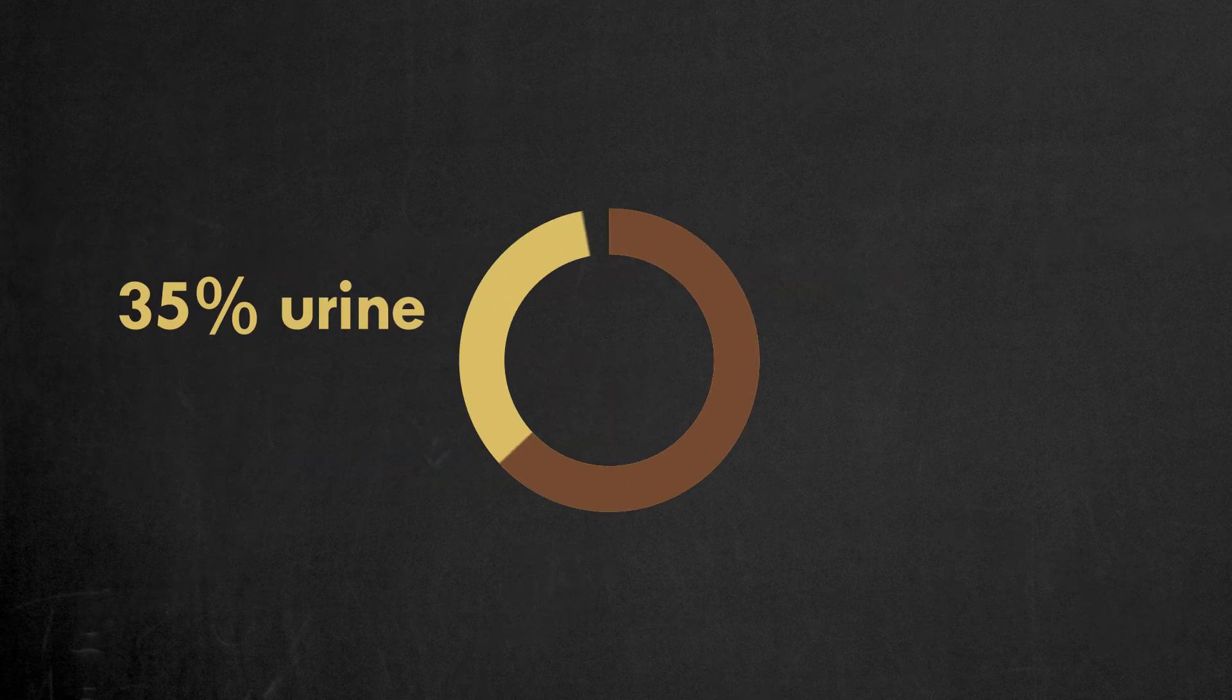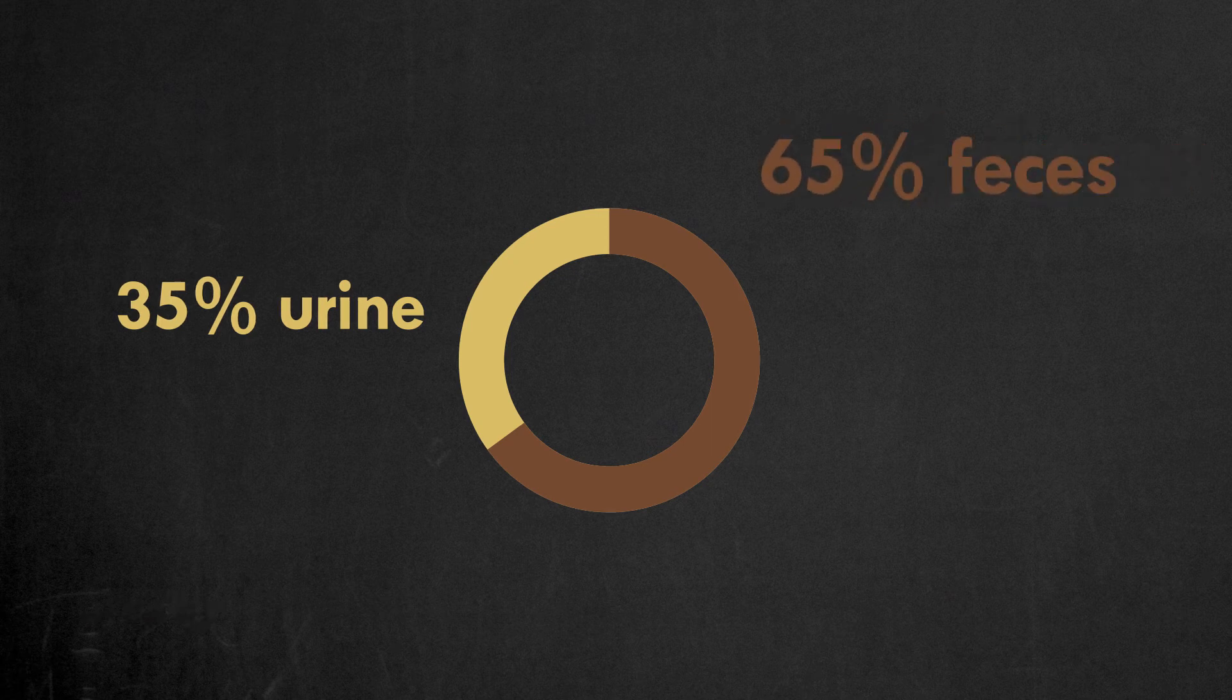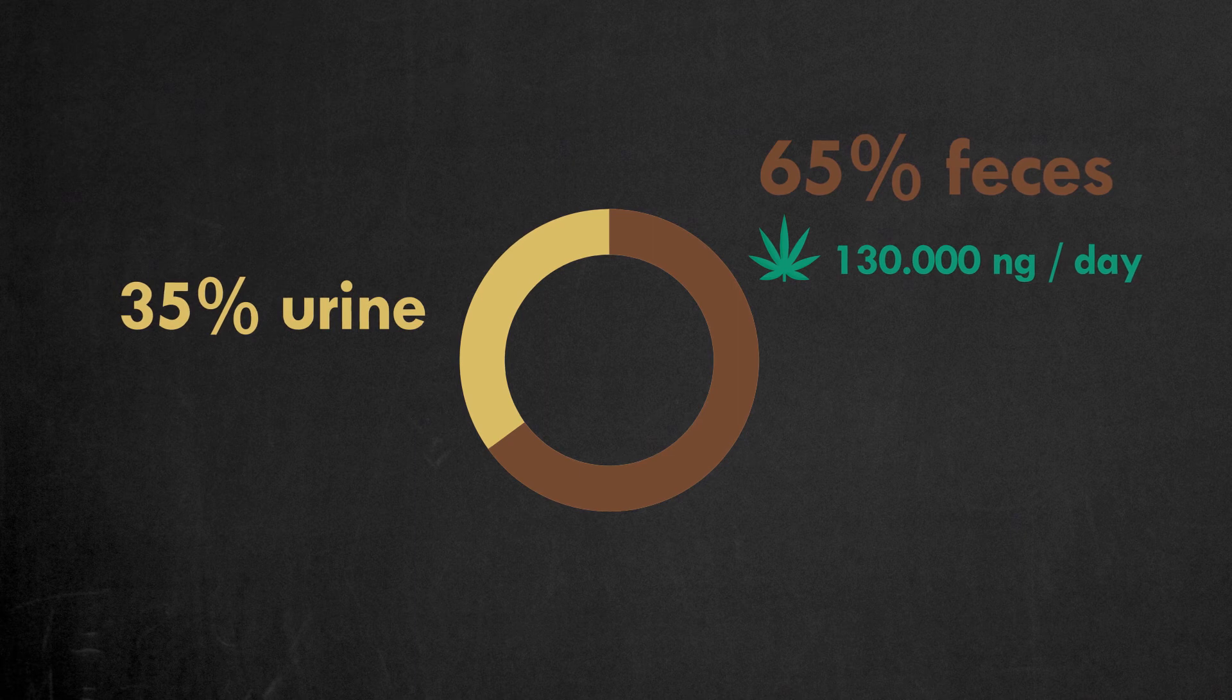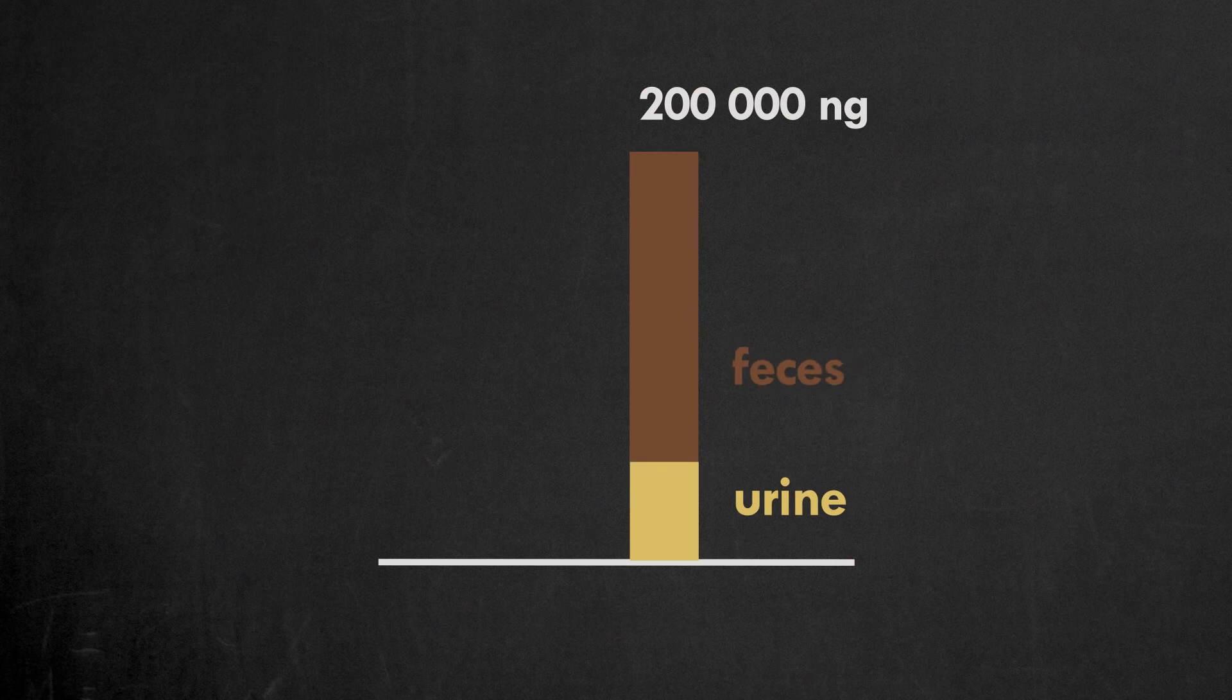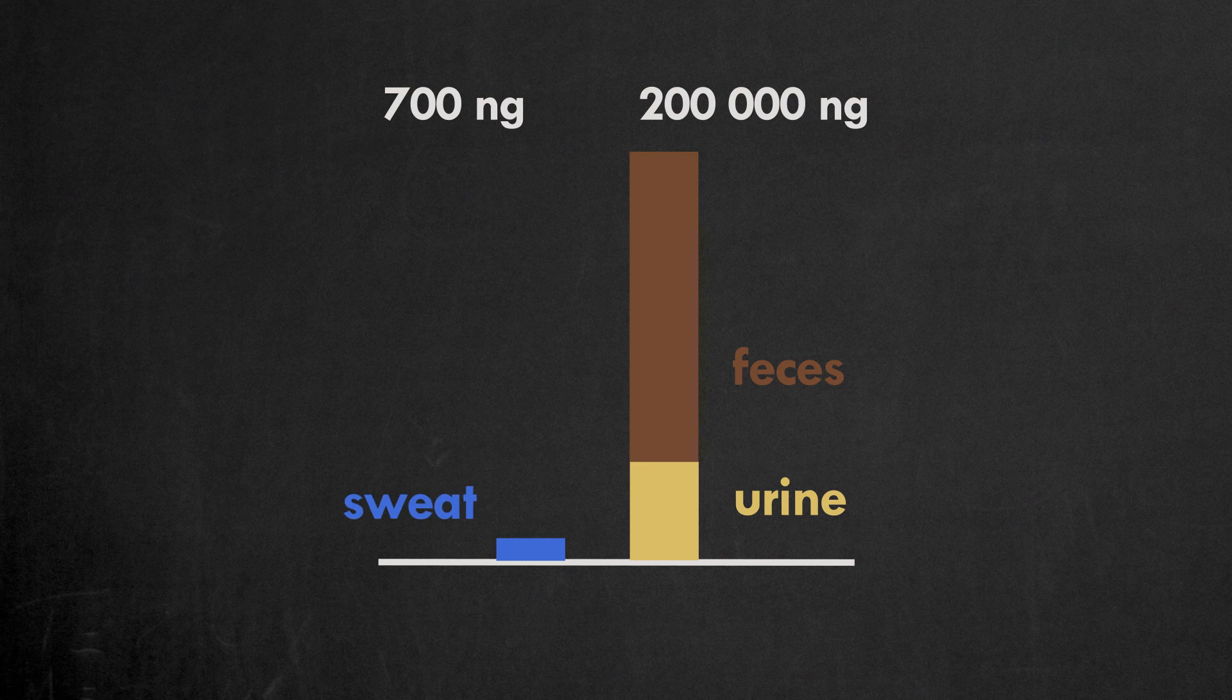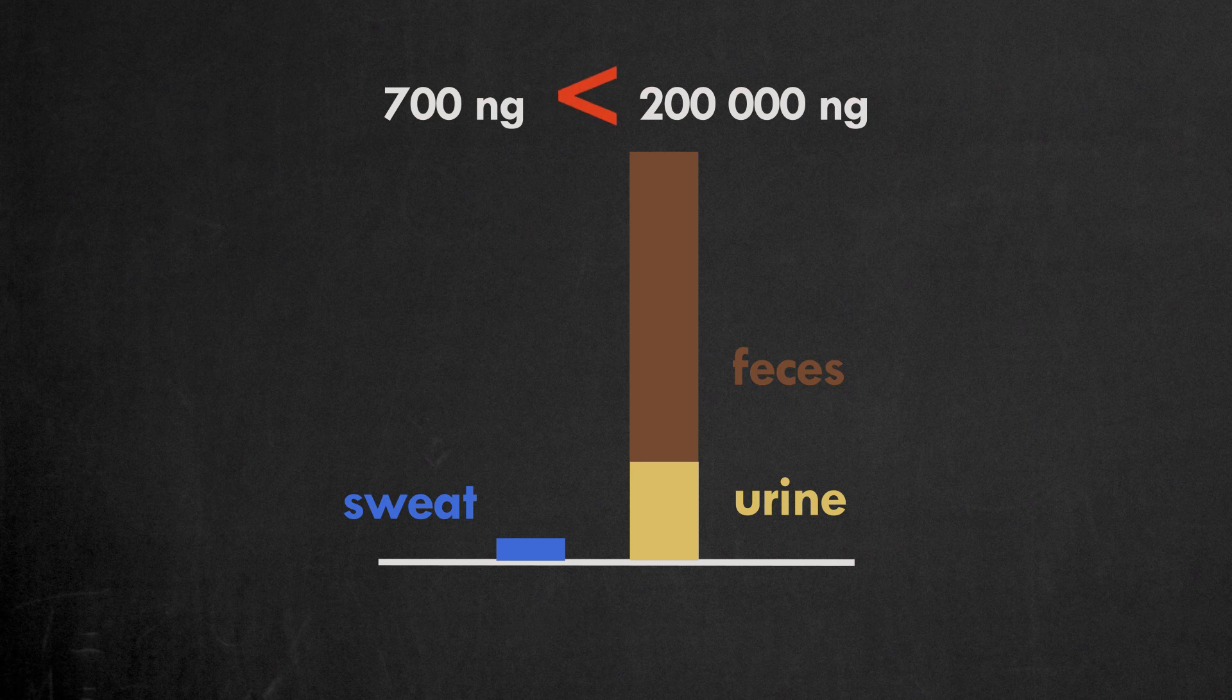Only 35% of THC is excreted in the urine and about 65% is excreted in the feces, which equals 130,000 nanograms daily. The final results are the following: 200,000 nanograms are excreted with the urine and feces daily, 700 nanograms are excreted with the sweat. The amount of THC excreted with the sweat is almost 300 times lower than the amount excreted with the urine and feces.